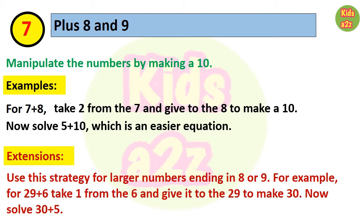We can also extend this strategy to larger numbers that end in 8 or 9. For example, for 29 plus 6, we will take 1 from 6 and give it to 29 to make 30. So the new equation will be 30 plus 5.